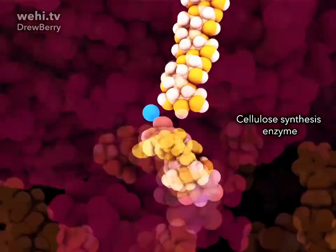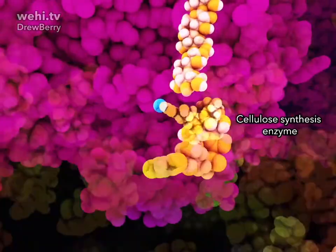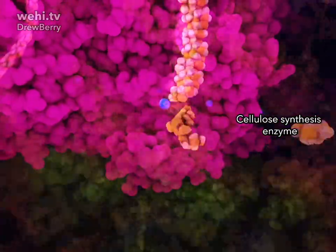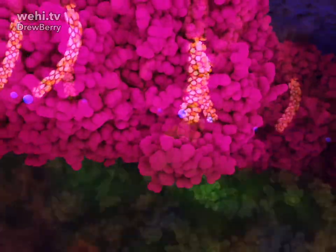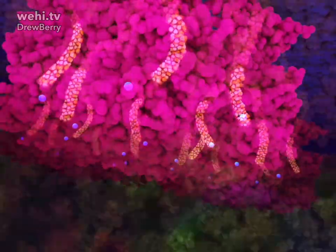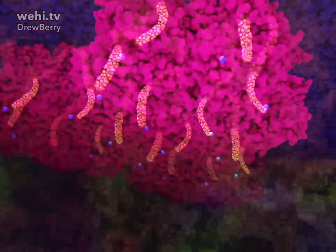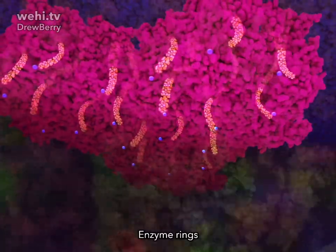Plants produce cellulose using enzymes to drive the catalytic synthesis reaction. Enzymes are grouped together into symmetrical rings on the outer membrane of plant cells.